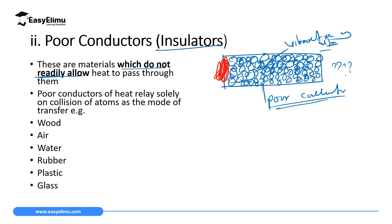Examples of poor conductors include wood, air, water, rubber, plastic, and glass.